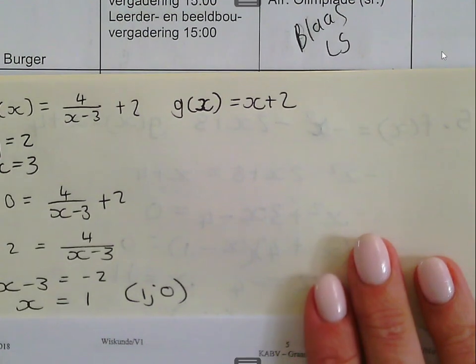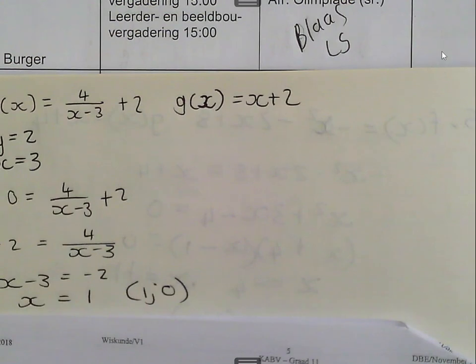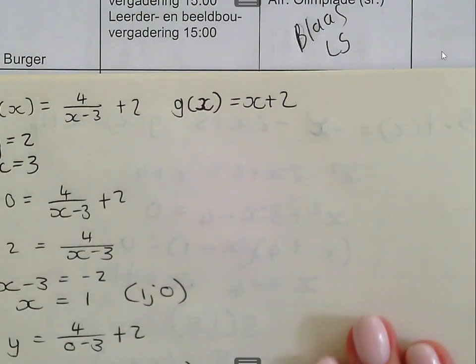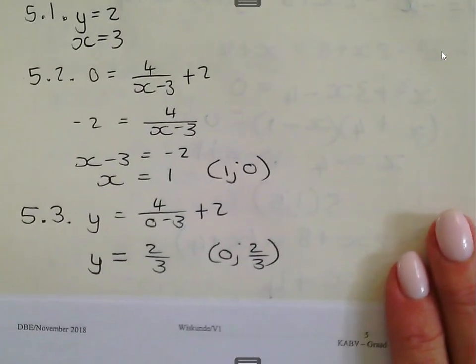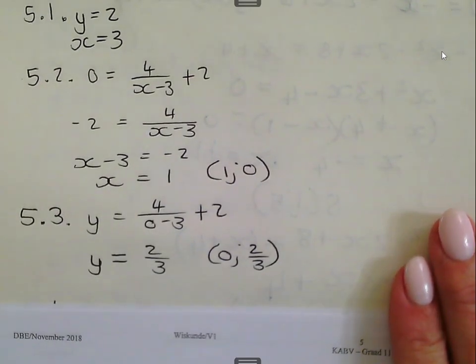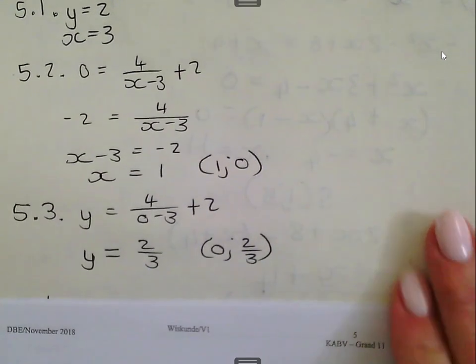They did not ask for coordinates, they just said the x-intercept, but please get into the habit of always writing a coordinate. Then the y-intercept of f gives you 2 over 3. The coordinates 0 and 2 over 3.